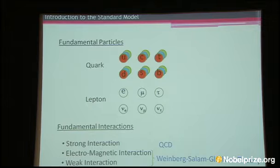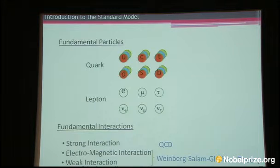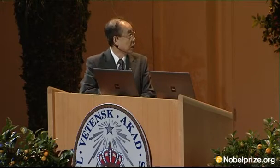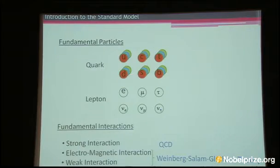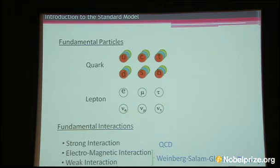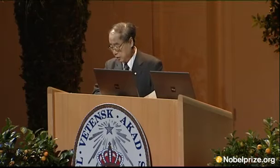Present knowledge on the elementary particles is well described by the so-called standard model. According to the model, the number of species of quarks is six. In addition to U and D, we have C, T, and S. Similarly, the family of the electron consists of six members. They are called leptons. The three types of neutrinos are among them.